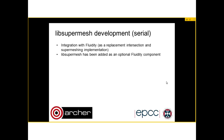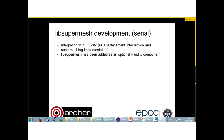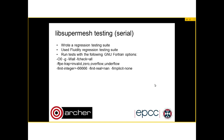The code has been integrated with Fluidity as an optional component that you can compile against, and it can be used as a replacement intersection and supermeshing implementation. We wrote a regression testing suite and also used the Fluidity regression testing suite — if you use LibSuperMesh as the intersection finder then Fluidity will use our code, so we could verify correctness with Fluidity test cases. We also used these options to make sure there were no overflows or underflows, and used Valgrind to check for memory leaks.